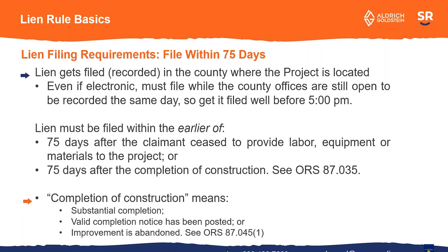When does the 75 days run? In Oregon, it's basically 75 days after you cease to provide labor, equipment, or materials, or 75 days after the completion of construction, whichever is earlier. That's why you want to get in early within that 75 days so you're not depending on whether it was the last day you were on the project or when the project was completed. The completion of construction basically means the project is substantially complete, or a completion notice has been posted, or the project has actually been abandoned. There is a way to show legally that the project has been abandoned, which is a more recent requirement for situations where the project is never completed.